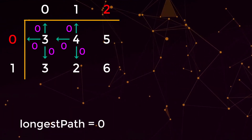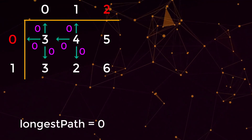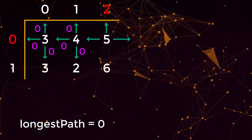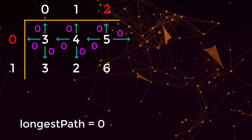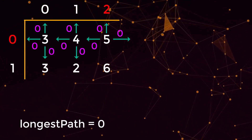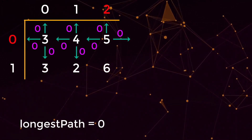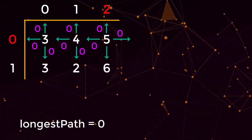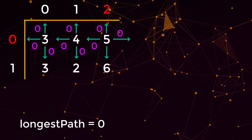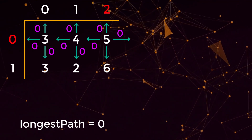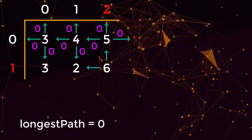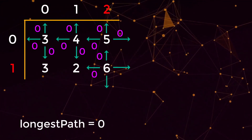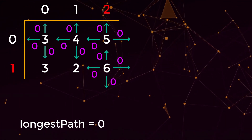At position (0,2), our left, up, and right directions all return zero because they're either out of bounds or hold values less than five. However, looking down, six is greater than five, so we make another recursive call to position (1,2). At (1,2), up and left are less than our current position, and right and down are out of bounds, so all directions return zero.